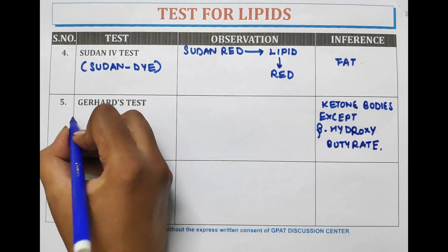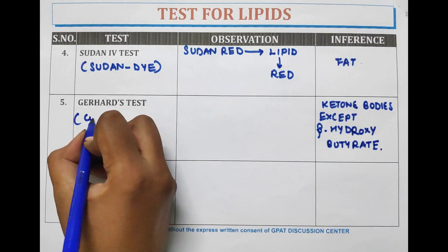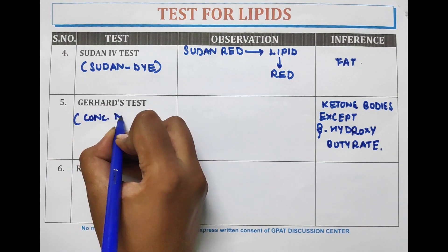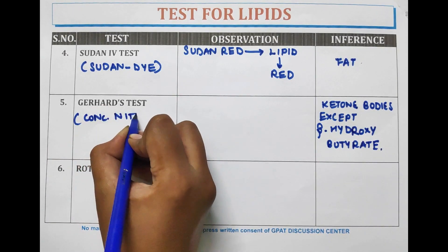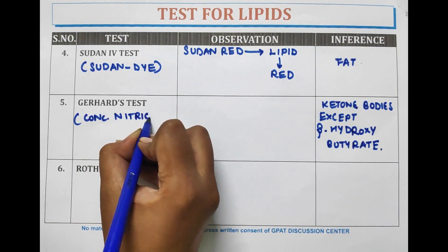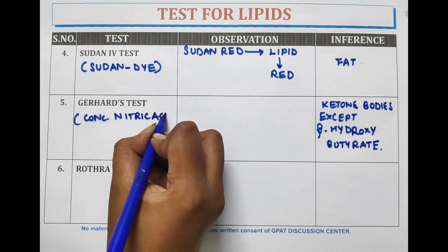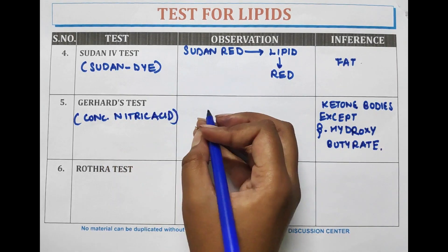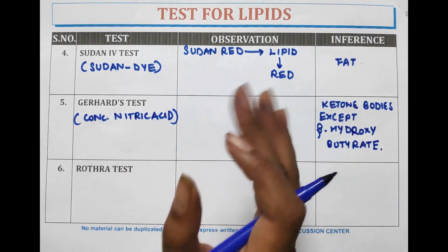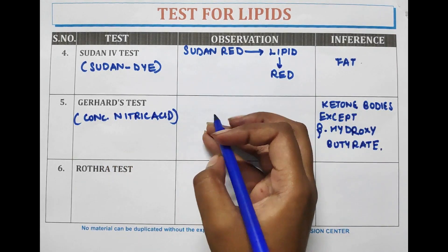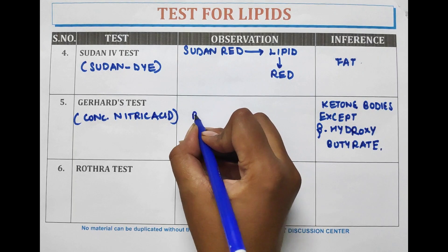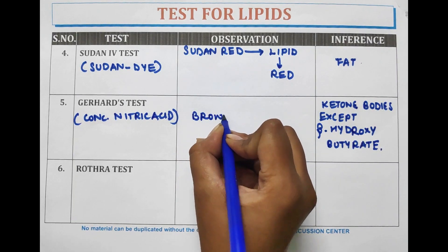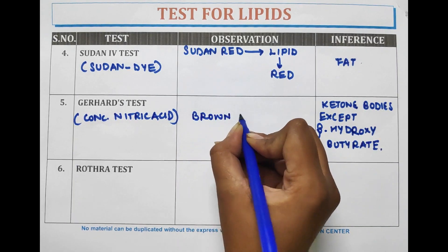The next test is the Gerhard test. This test is used for the ketone bodies, except beta-hydroxybutyrate. In this test, concentrated nitric acid is used, and a brown color forms, indicating the presence of ketone bodies.